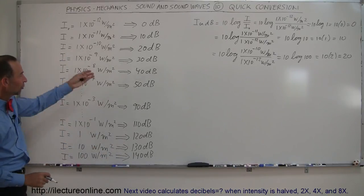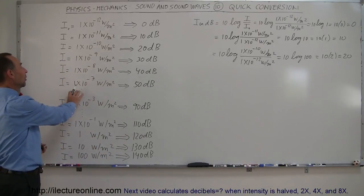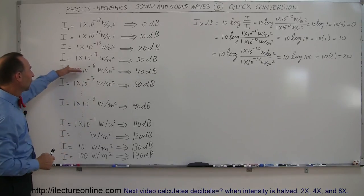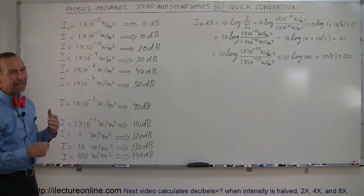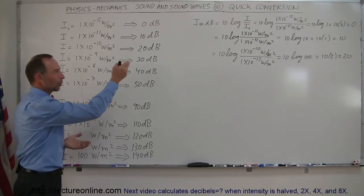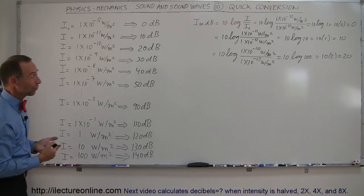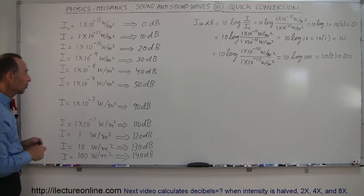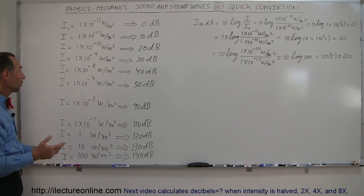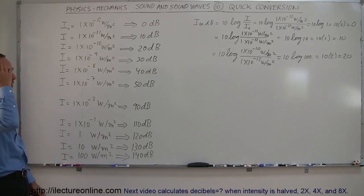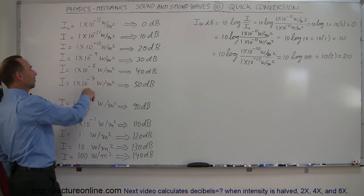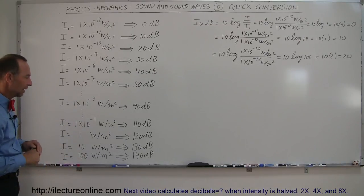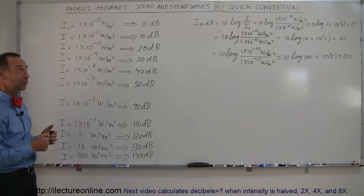So you can see there's a quick conversion scale between intensity in watts per square meter and decibels. Notice that these are all very nice round numbers, and anything in between you actually have to work out with the equation. But this is a very nice quick reference — so if someone says 10⁻⁶, that's 10 times bigger than 10⁻⁷, which would be 60 decibels. And I think you start getting the hang of that pretty quickly.